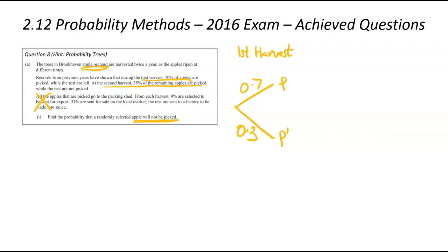At the second harvest, 35%. So this branch up here, once they're already picked, they're not going to be picked again in the second harvest. So we don't actually need that branch. This here relates to the second harvest, which is the second event. Again, the apples that weren't picked the first time could be picked, or they could be not picked. We've been told 0.35% of them are going to be picked, and the remaining 0.65% will not be picked.